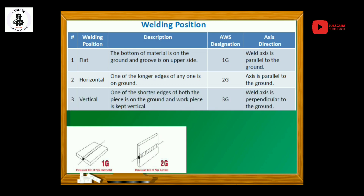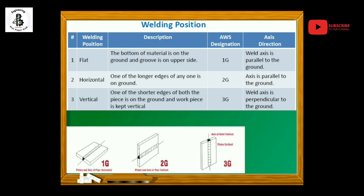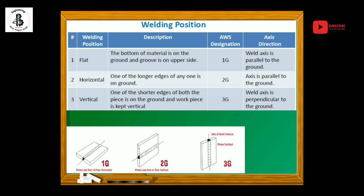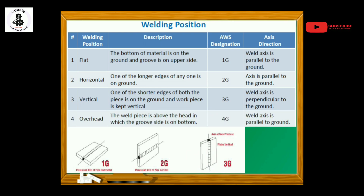The third is the vertical welding position. As shown in the figure, one of the shorter edges of both pieces is on the ground and the workpiece is kept vertically. In the 3G position, the weld axis is perpendicular to the ground, as indicated in the figure.